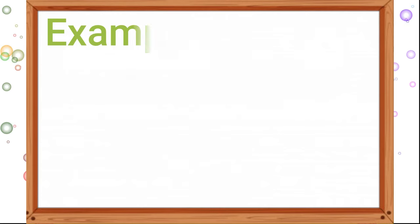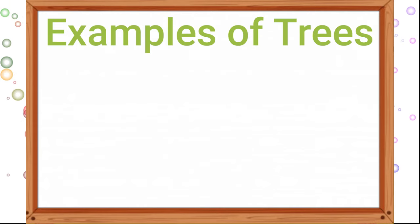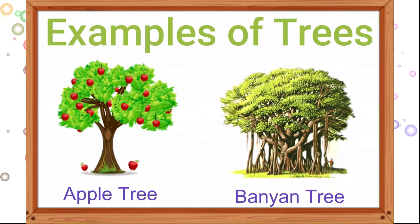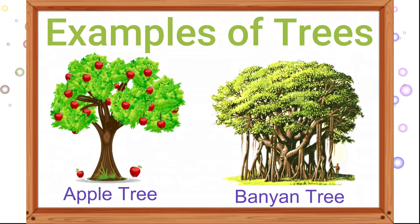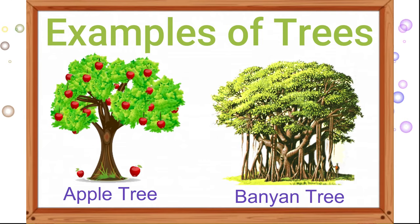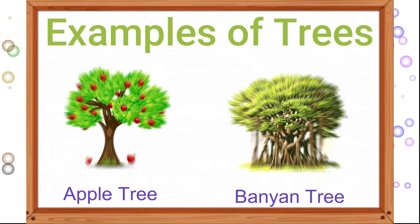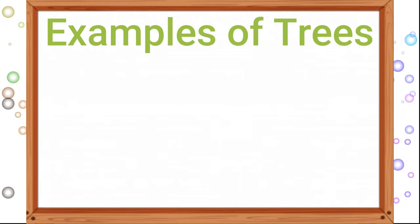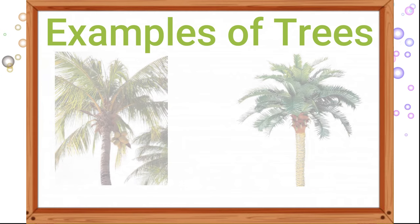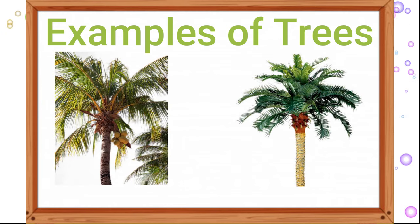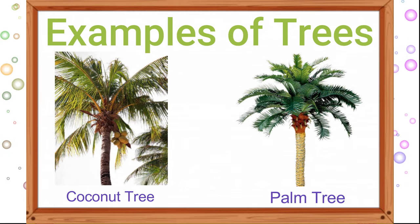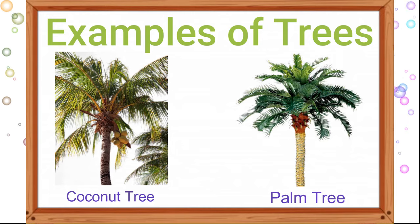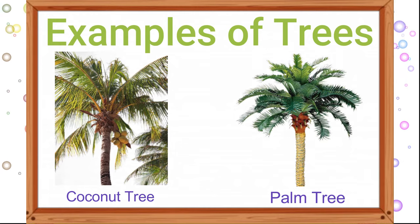Examples of trees are the apple tree and banyan tree. However, a few big trees do not have branches, such as the coconut tree and palm tree.